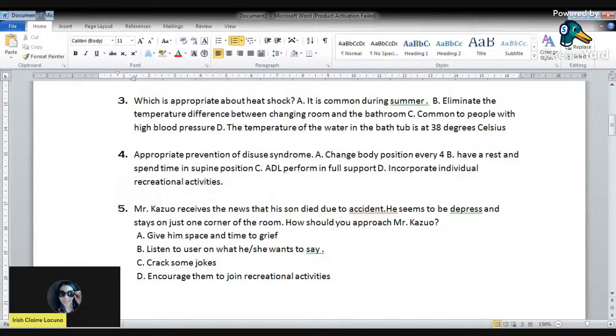Well, the correct answer for number four is letter D: incorporate individual recreational activities for prevention of disuse syndrome. It is actually related to elderly, when they need to perform or do other activities that could enhance their skills or they could become an energetic person, something like that. So that's letter D.